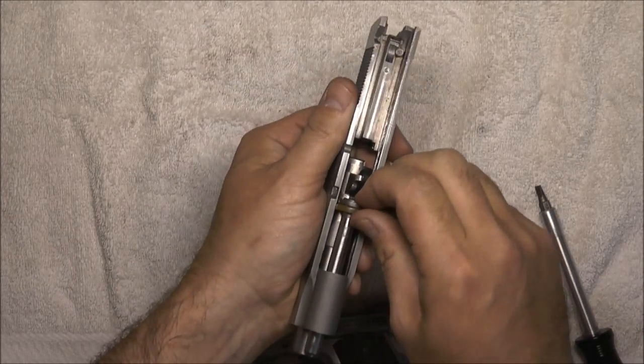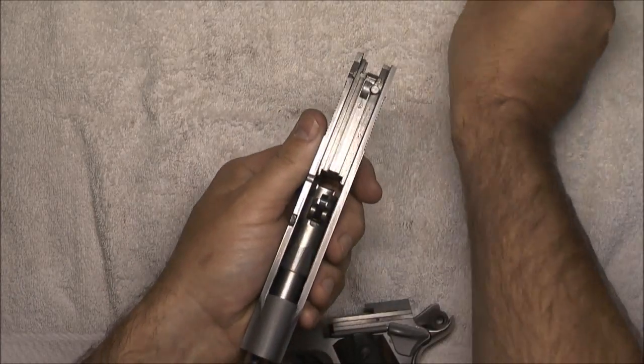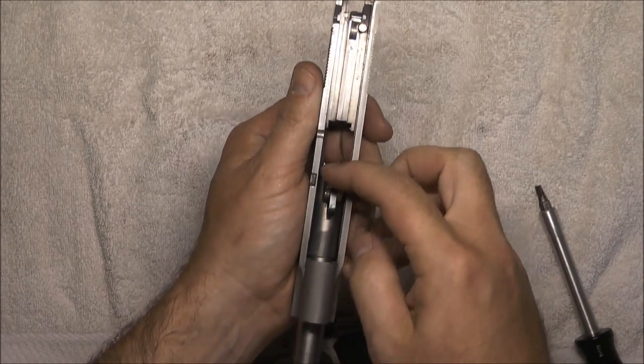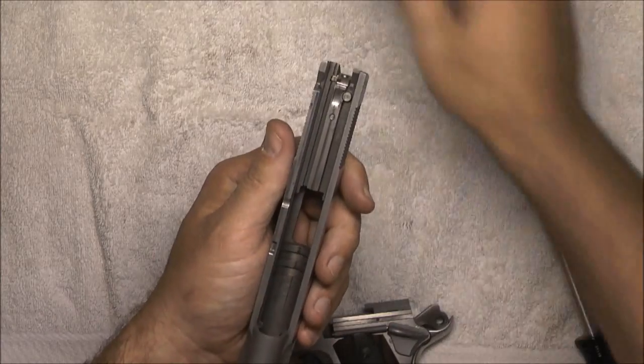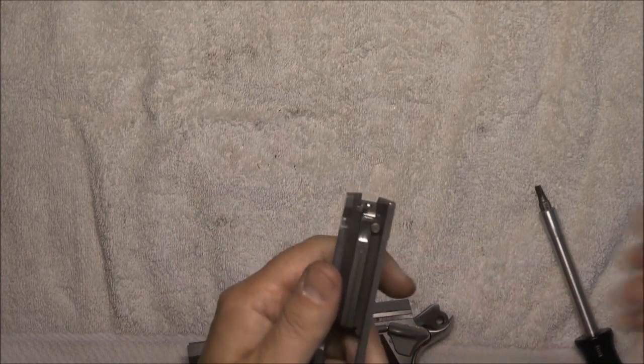You're left with your slide. We'll pull the guide rod out, drop the link on the barrel and we'll pull the barrel clear. Now we're left with the slide.